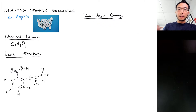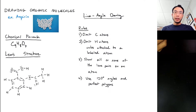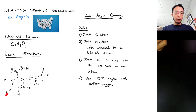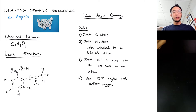This method is called line-angle drawing. Basically the idea is you take a Lewis structure and you don't write in any of the carbon atoms, and you don't write in any hydrogen atoms unless they're attached to a non-carbon atom — or another way to say this is that you only write in the hydrogen if the atom it's attached to is labeled as well. In line-angle drawings you can either show none of the lone pairs on an atom or all of the lone pairs — that's part of an assumption in a line-angle drawing.